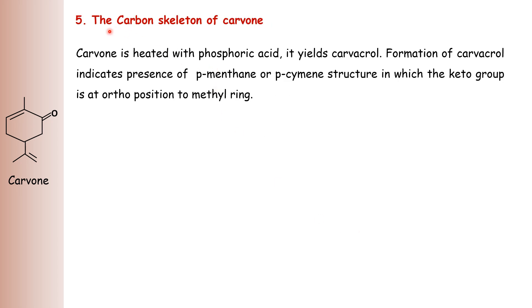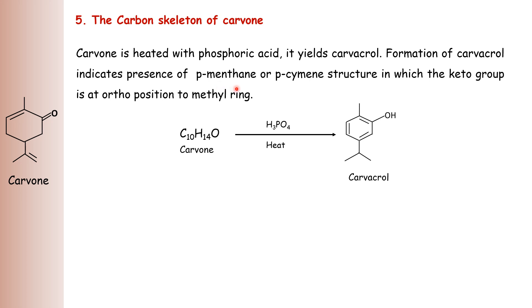Then we see the carbon skeleton of carvone. Carvone is heated with phosphoric acid and gives carvacrol. Formation of carvacrol indicates presence of a para-menthane or para-cymene-like structure in which the keto group is at the ortho position to the methyl group. In this product, the para-cymene-like ring structure and hydroxy group is present at the ortho position to the methyl group. Such a carbon skeleton should be present in carvone.